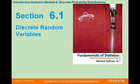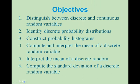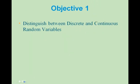Introductory Statistics, Module 6: Discrete Probability Distributions, Section 6.1: Discrete Random Variables. We will look at six objectives in this section. Objective 1: we want to distinguish between discrete and continuous random variables.